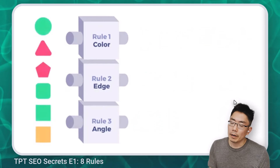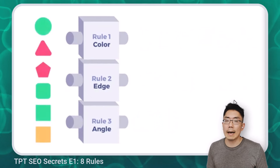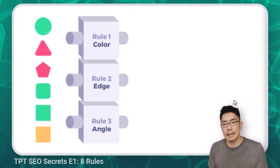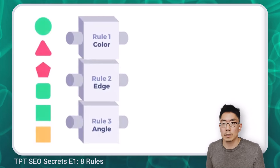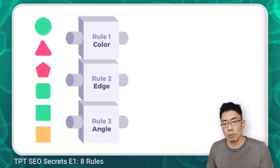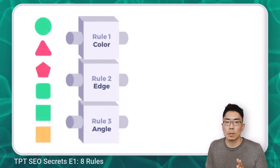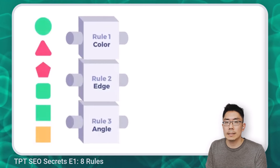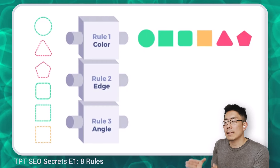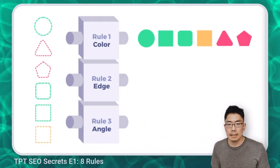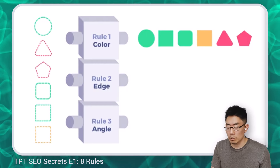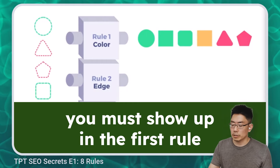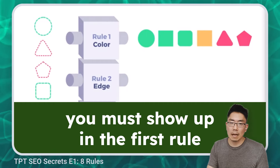So let's break it down. In their example, on the left hand side they have a bunch of shapes with different colors, different angles, different edges. TPT land is kind of like that — as we publish resources on TPT, it just gets added to the bottom of this growing list. Let's say someone is searching for green shapes. The first rule the search engine applies is it's going to put the green shapes at the front of the list. If you want to rank in TPT search, you must show up in the first group for that first rule. TPT search uses a tiebreaker algorithm.